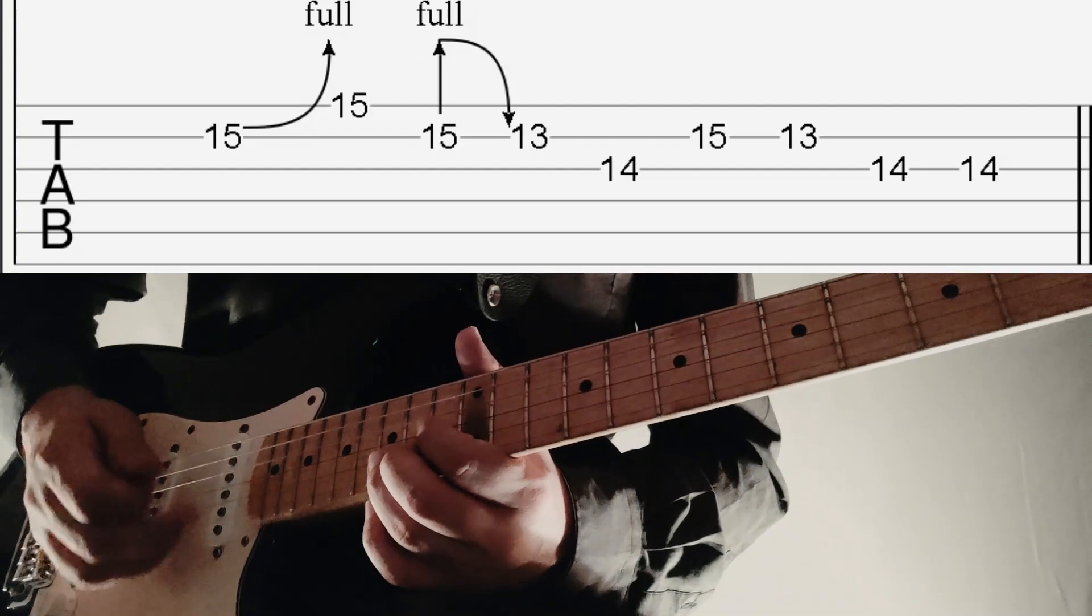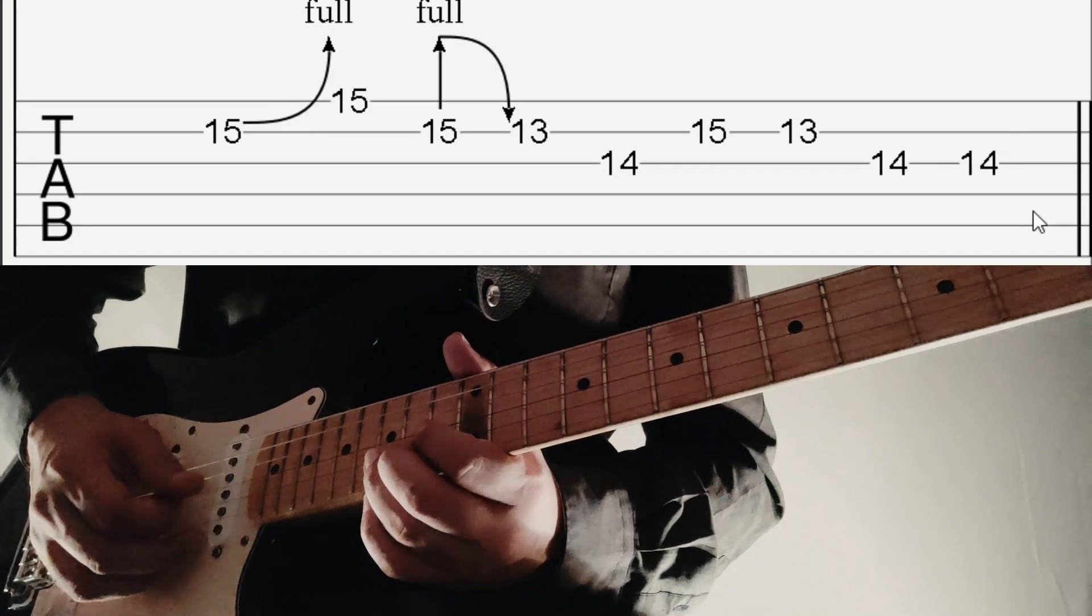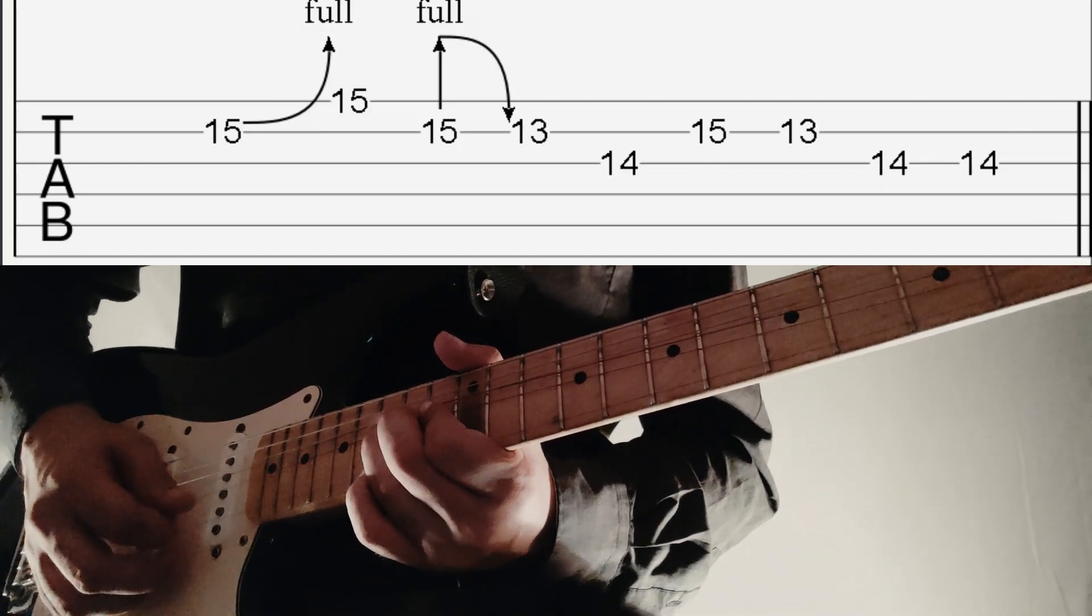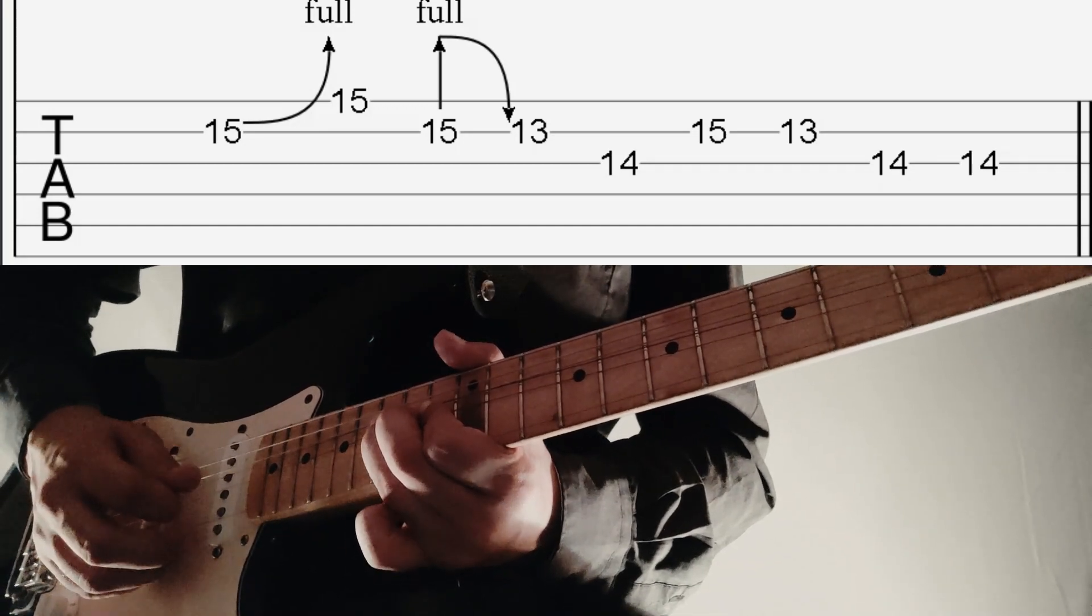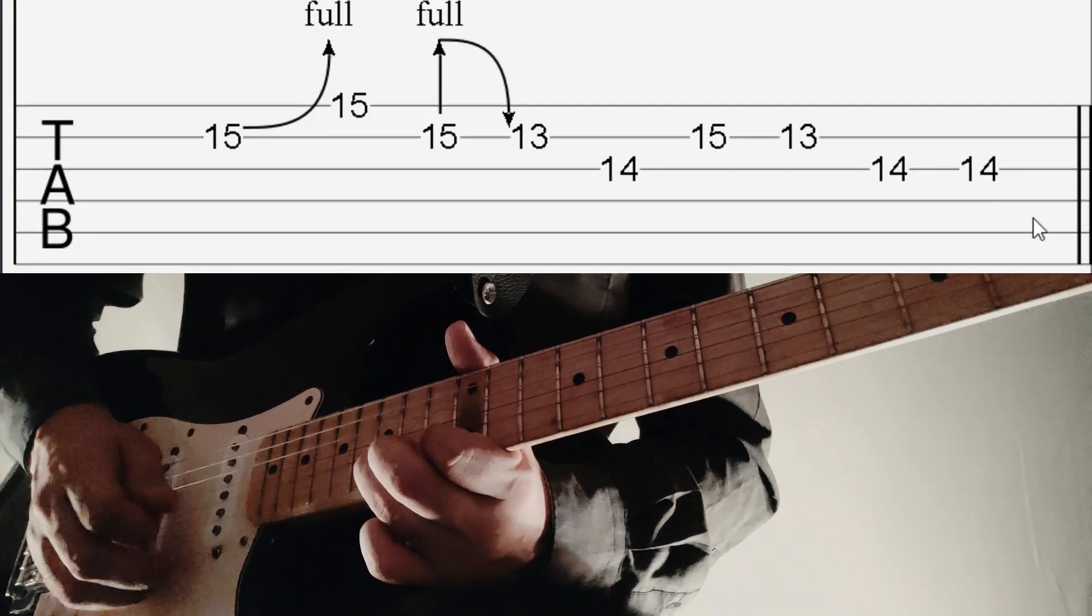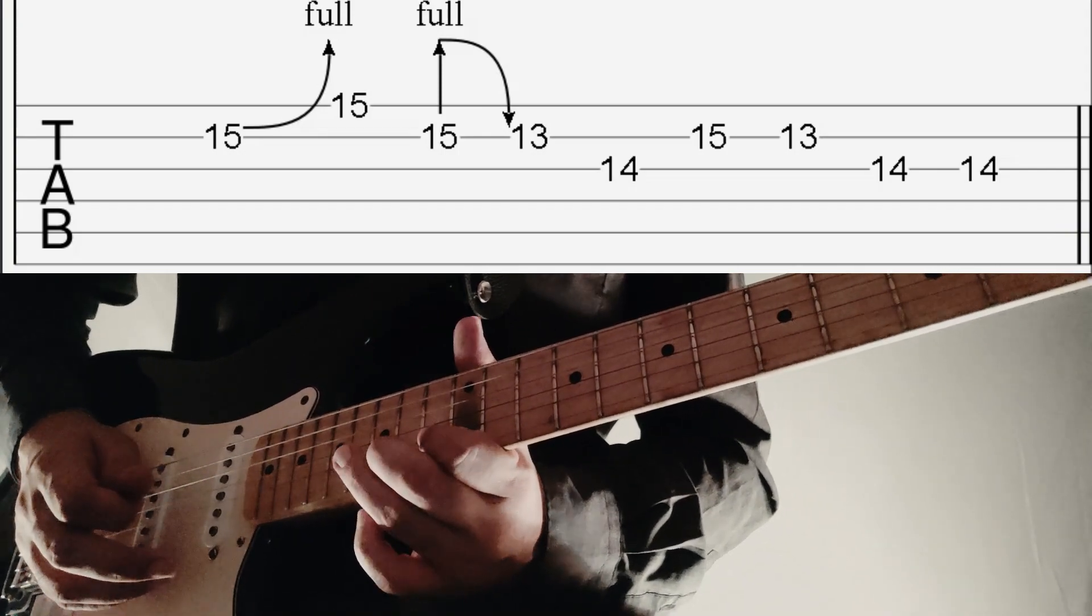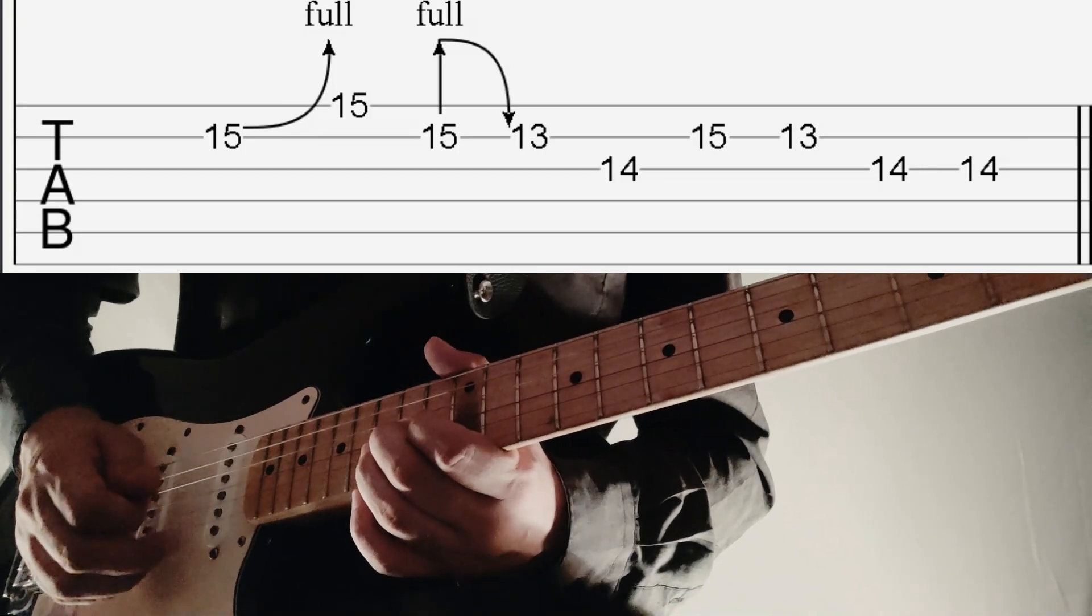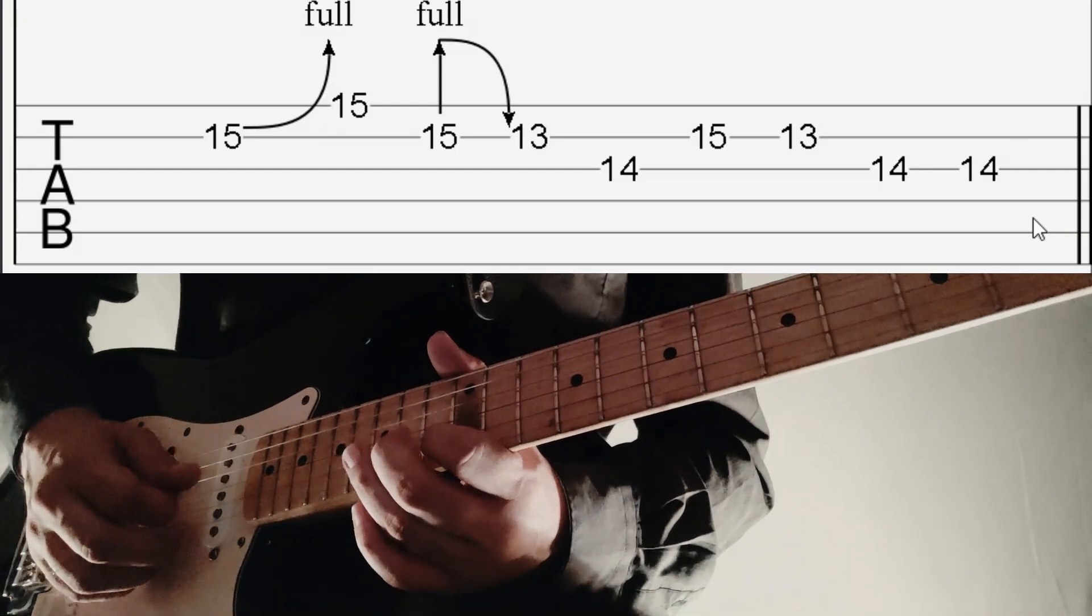We'll start with the tone bend on 15th fret 2nd string followed by 15th on high E, which is then followed by a release and we'll pull off from 15 to 13 on 2nd string, 14th on G, then again 15 to 13 on 2nd string, double stroke on G.